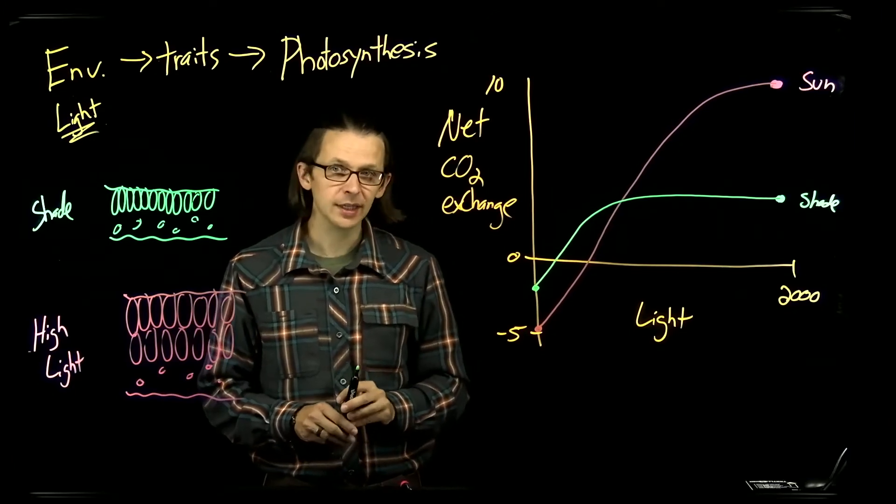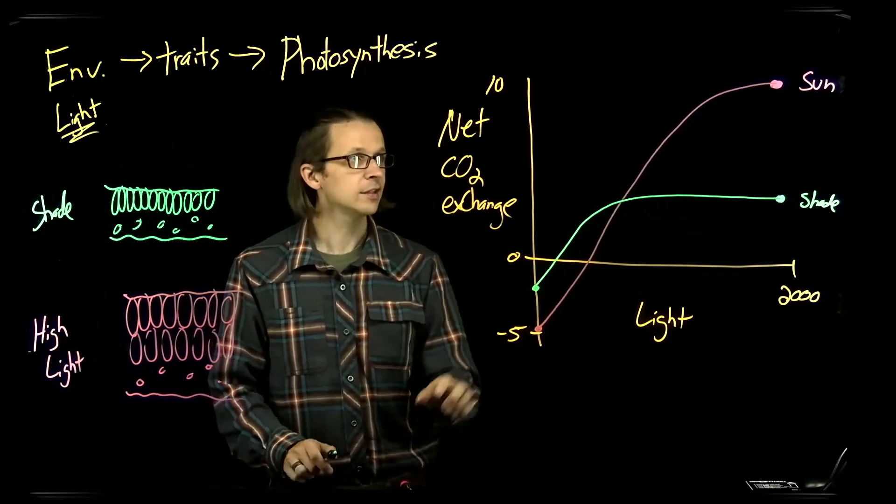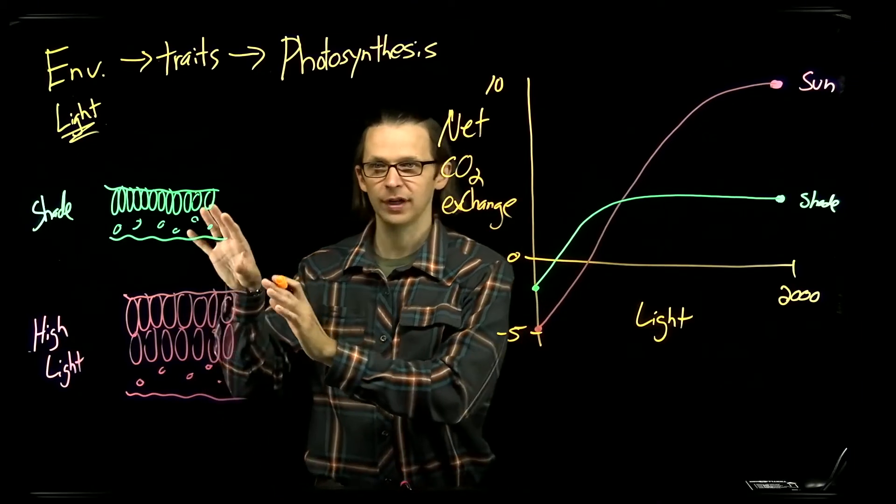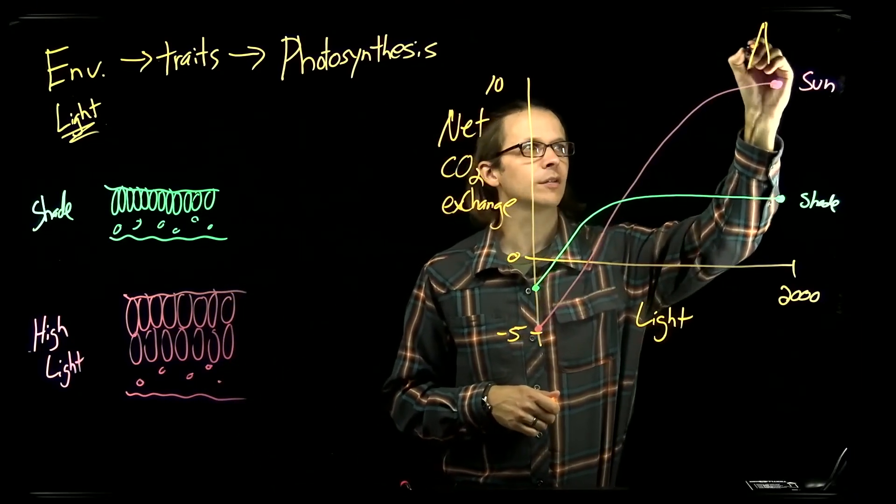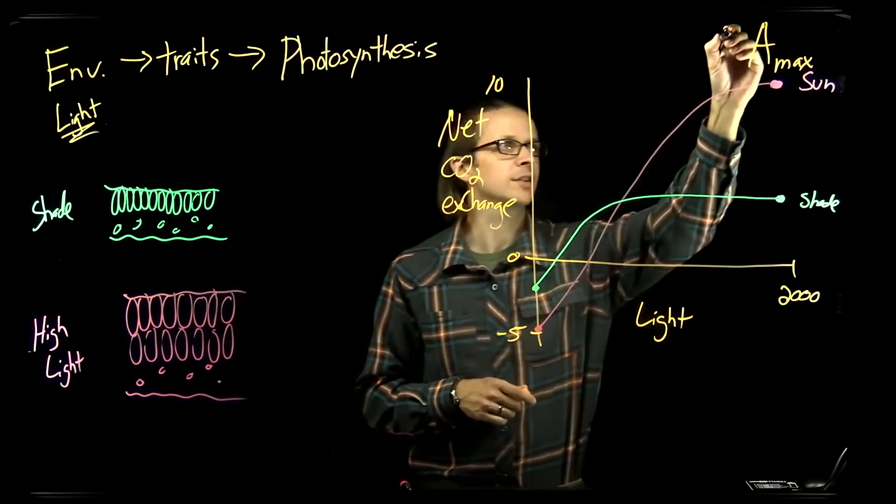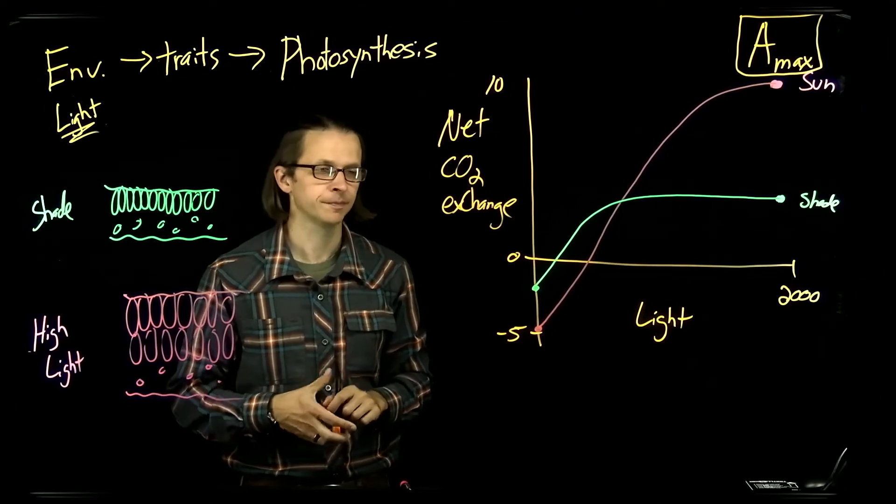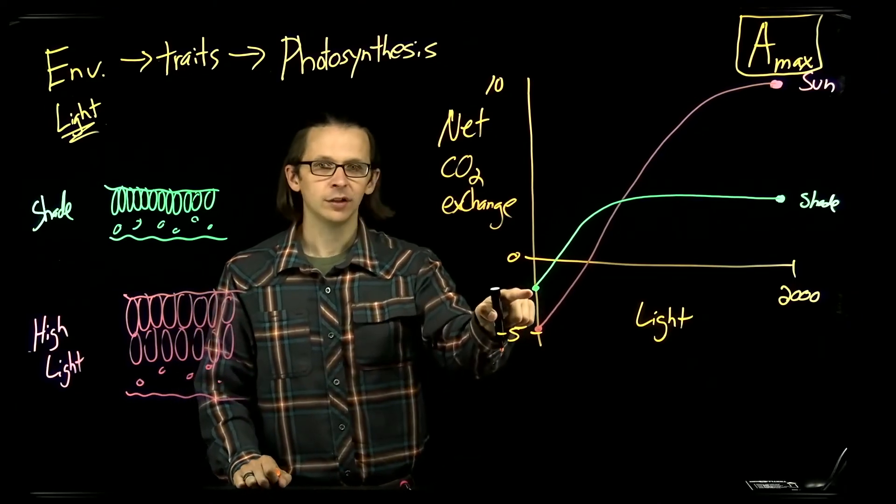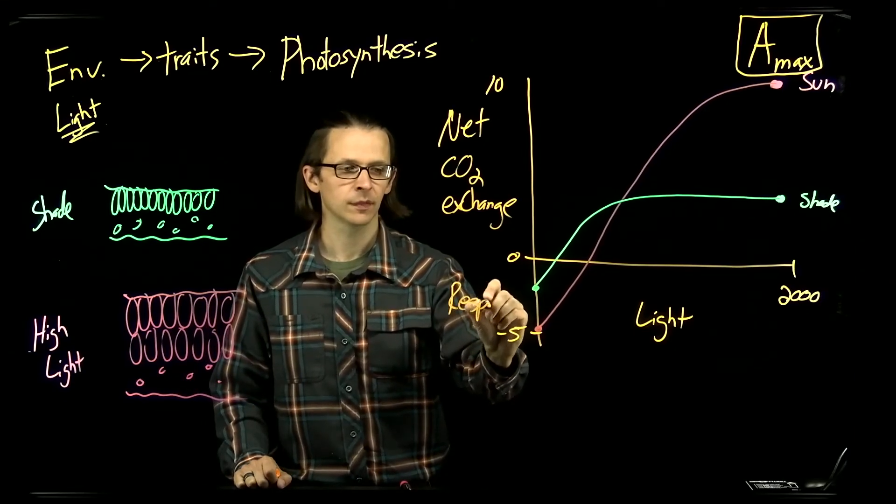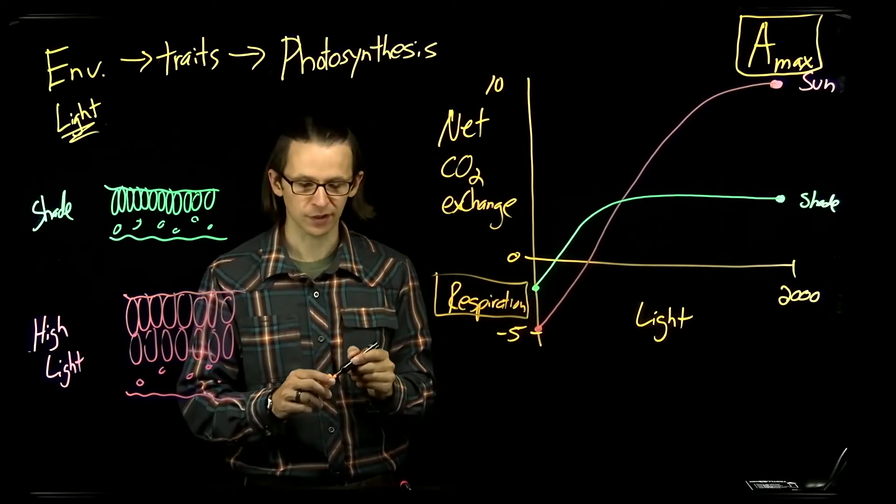There are three key characteristics of these photosynthetic light response curves that I think you should know. These values of their maximum photosynthetic rates under high light that are characteristic of the traits of these leaves. Physiologists use a couple of terms for this. One of the common ones is A max. The maximum rate of assimilation is the maximum photosynthetic rate that can be achieved at very high light levels. The value of CO2 exchange in the dark, these two points are called the respiration rate, the rate of respiration reflecting the upkeep costs of our factories.